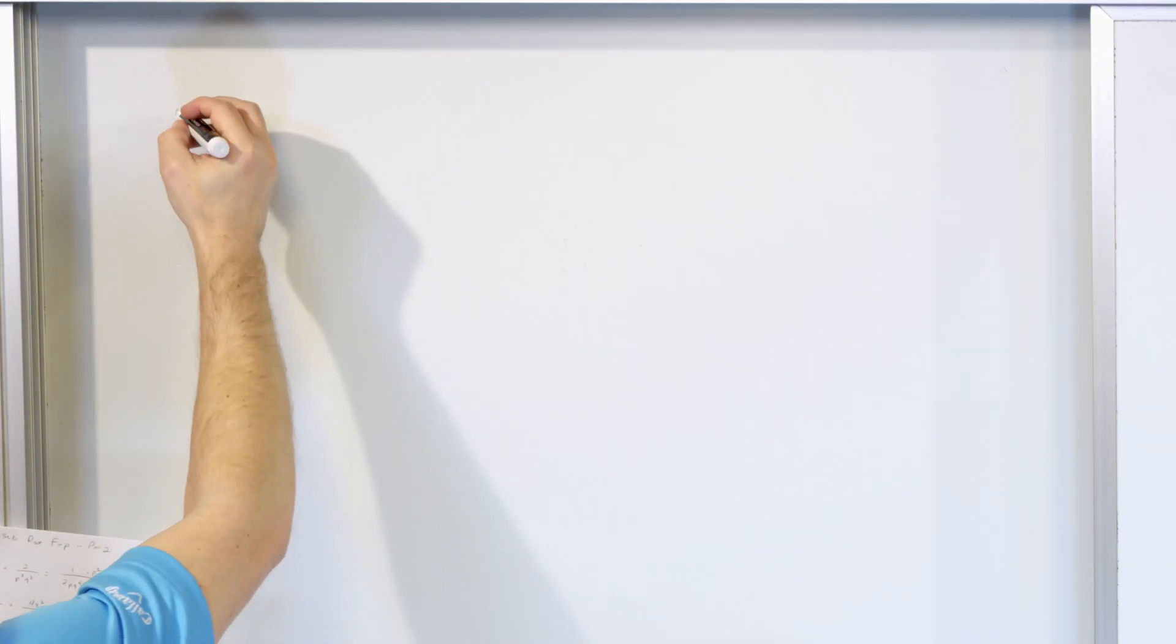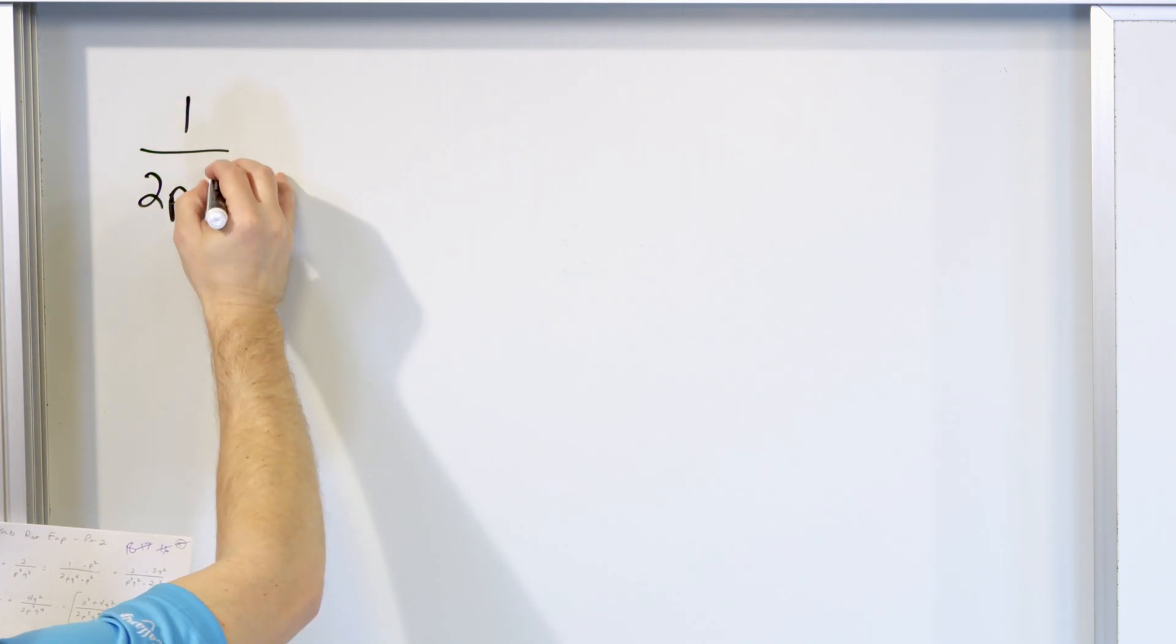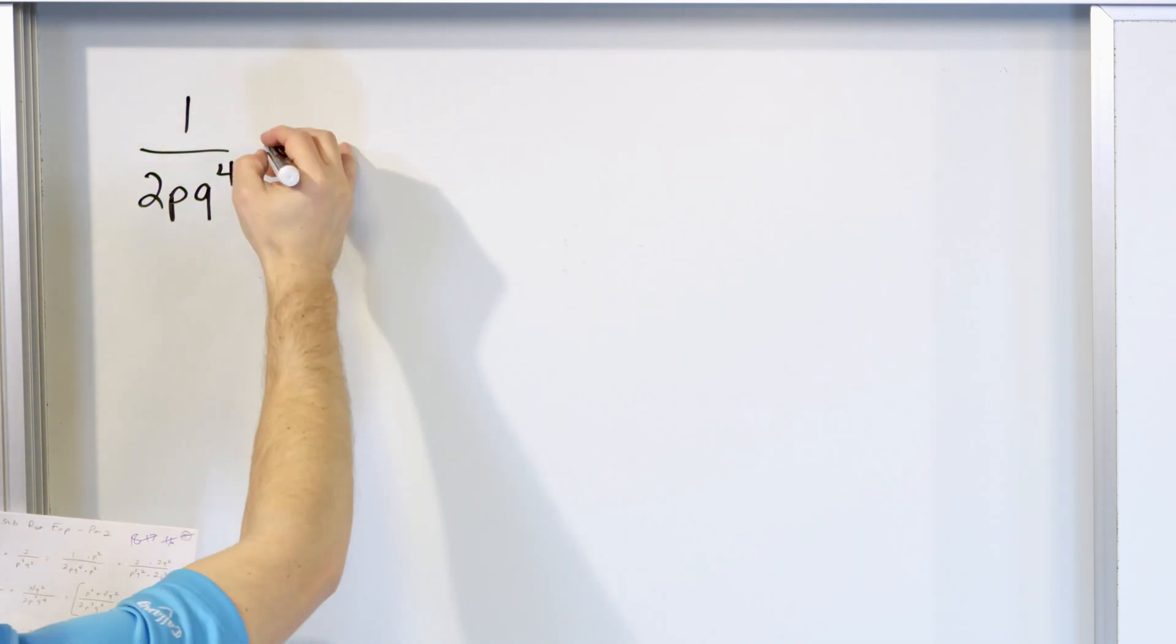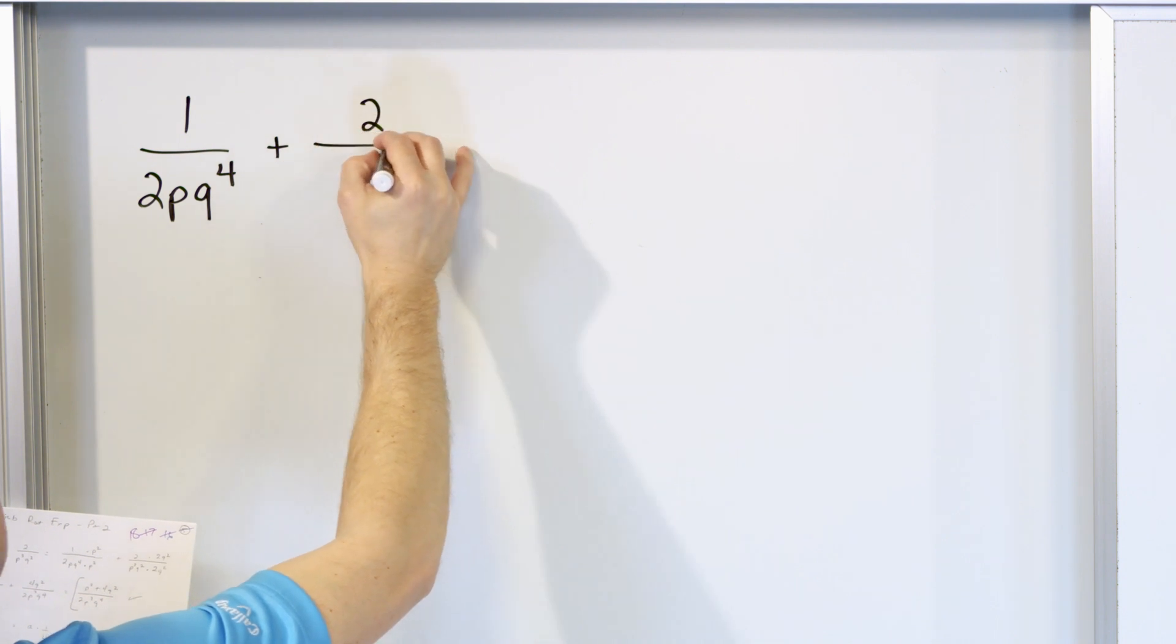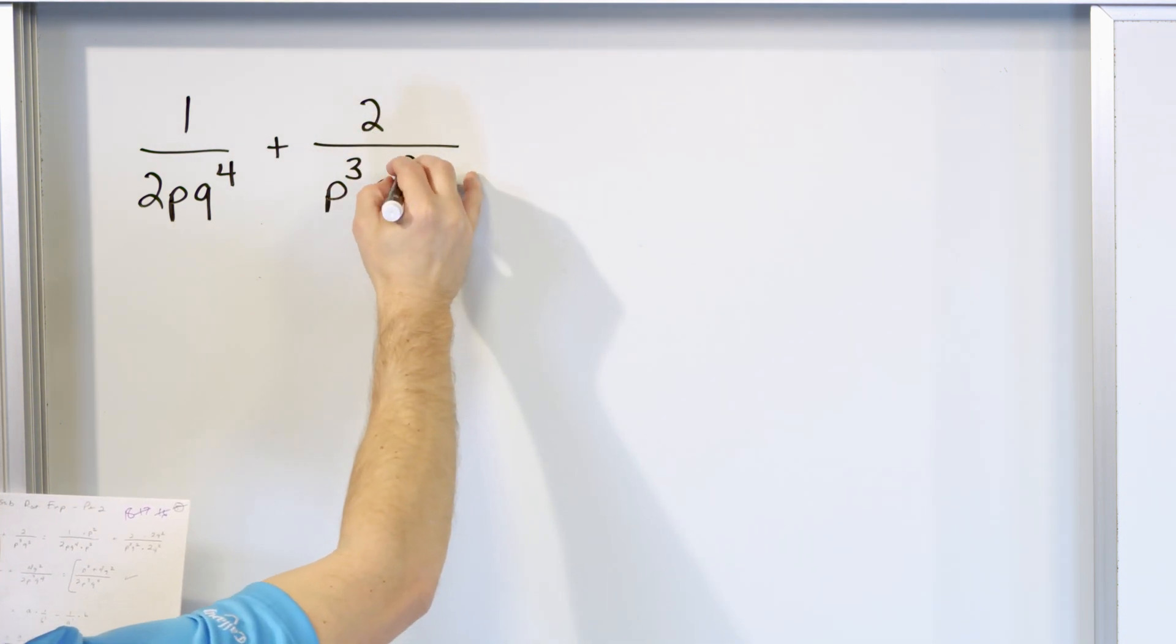So we're doing the same process, just getting more practice with slightly more complicated problems. First problem, not too bad, is 1 over 2 times p times q to the 4th power. We'll add to that 2 over p to the 3rd power q to the 2nd power.